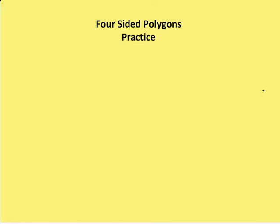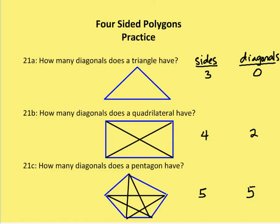Let's take a look at the problem — question 21. How many diagonals does a triangle have? The definition of a diagonal is a line that connects non-consecutive vertices. A triangle has no non-consecutive vertices, so even though it has three sides, it has zero diagonals.